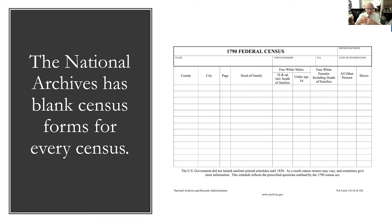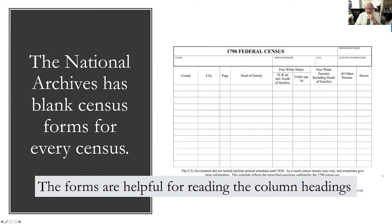The National Archives has blank census forms for every single census from 1790 to the current census records. If you can't read the headings or want a convenient way to get into census records, you might want to have a copy of the headings on a second monitor or an open window so you can quickly check which column you're in, because it can get confusing reading across the columns, especially on early census records since they change quite frequently.